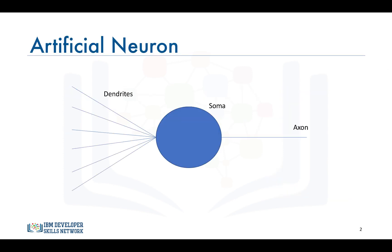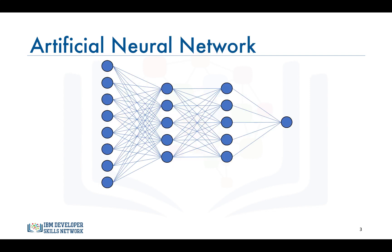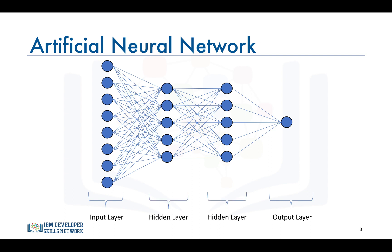In the previous video we established that the shape of an artificial neuron looks like this in order to resemble a real biological neuron. For a network of neurons we normally divide it into different layers. The first layer that feeds the input into the network is called the input layer. The set of nodes that provide the output is called the output layer, and any sets of nodes in between are called the hidden layers.